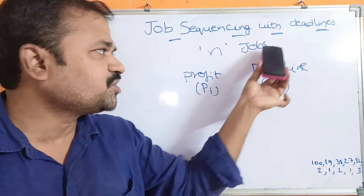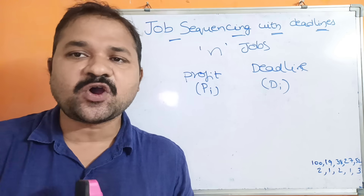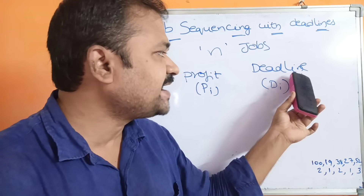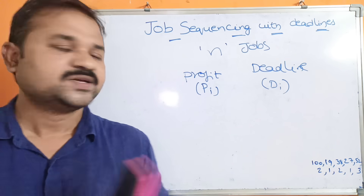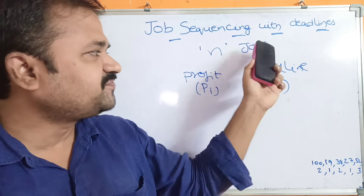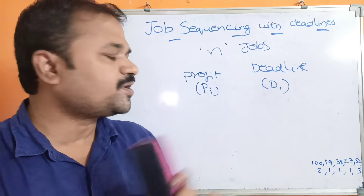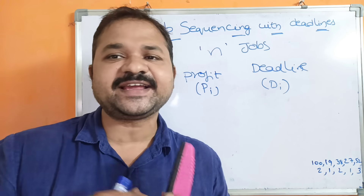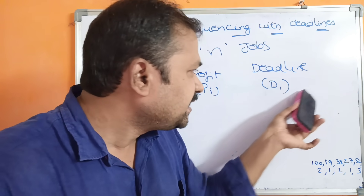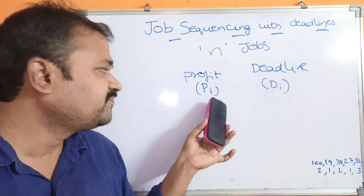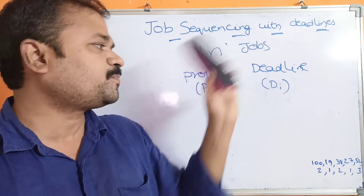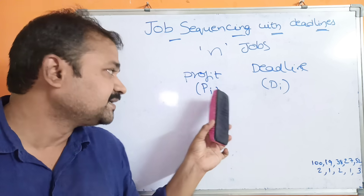Assume we have n jobs, where each job has a profit Pi and a deadline Di. P1 and D1 are the profit and deadline of the first job; P2 and D2 for the second job, and so on. If we complete a job by its deadline, we earn the corresponding profit. If we can't complete the job by its deadline, we can't earn the profit.